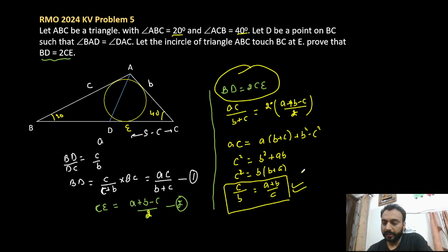So that ratio we can create by using similarity. You can see one of our triangles has sides c and b, and another has sides a plus b and c. Let's try to create a triangle having sides a plus b and c.